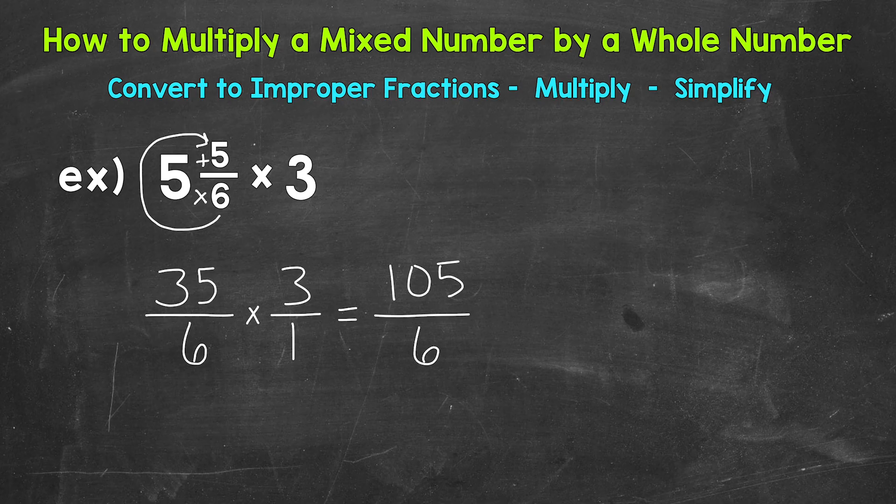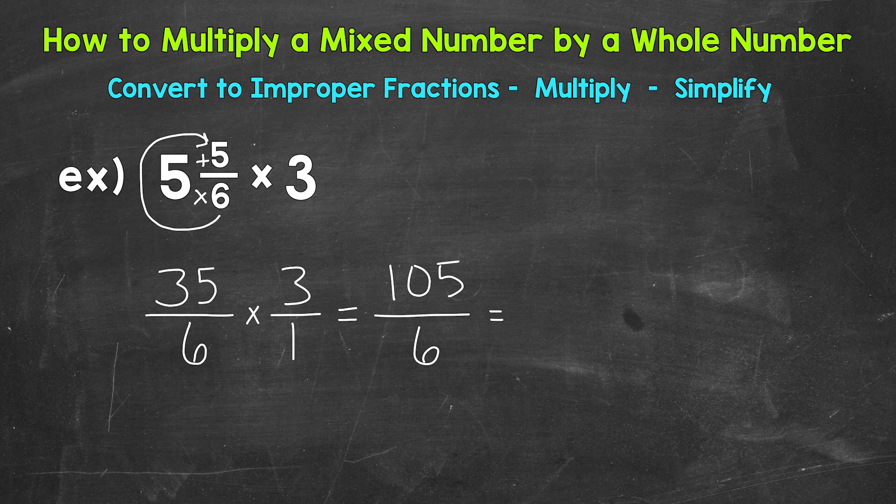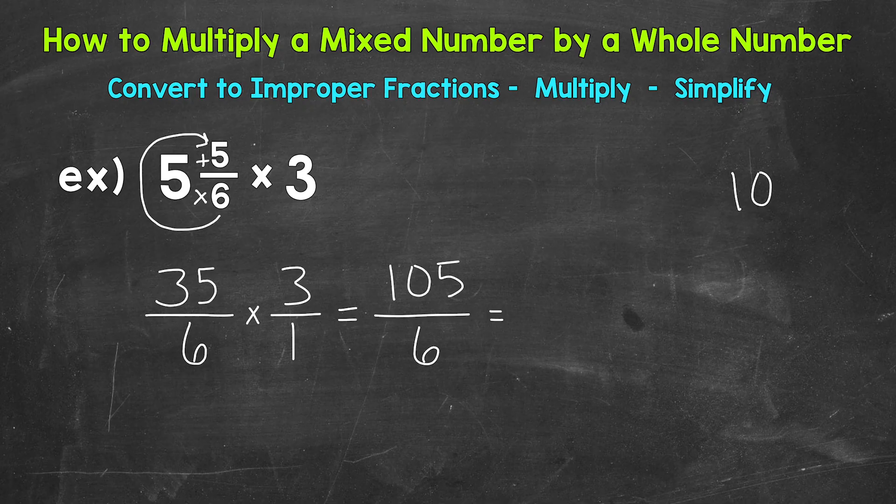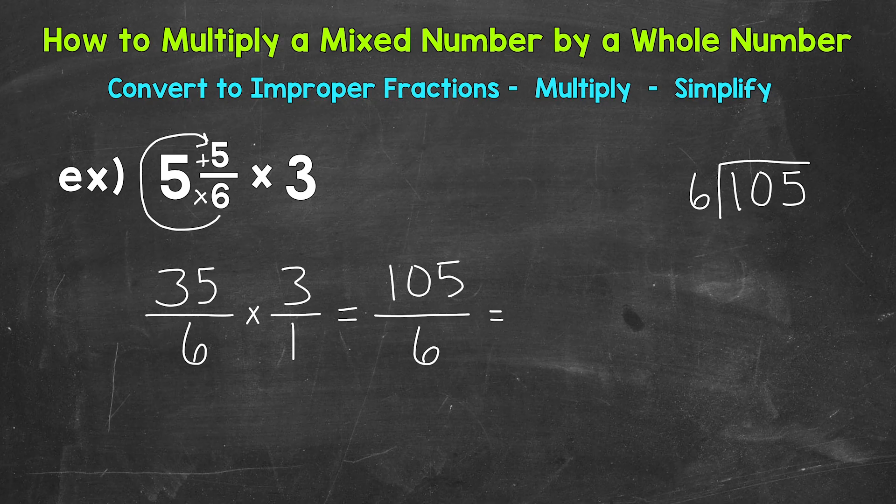So our answer as an improper fraction is 105 sixths or 105 over 6. Now let's convert that to a mixed number. We do that by dividing our numerator by the denominator. So 105 divided by 6. I'm going to come to the side here to work through that. The first thing we need to do is find out how many whole groups of 6 are in 105. That's going to be the whole number part of our mixed number.